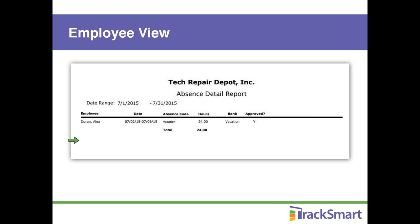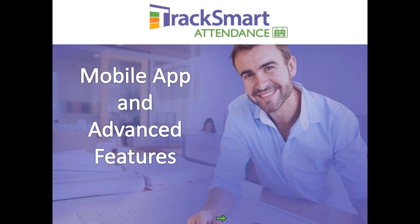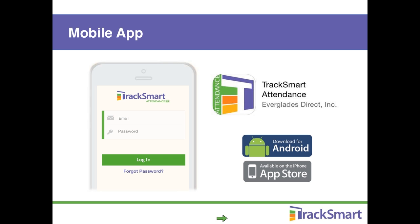An employee's absence report summarizes the absences they've taken for a requested timeframe. Moving on to mobile app and advanced features — access to the Track Smart Attendance employee mobile app is included with the free trial and all paid plans, available for both iPhone and Android. Search for it in the app stores by entering 'Track Smart.' Other apps like Track Smart Scheduling and Track Smart Time Clock will also appear, so make sure you choose Track Smart Attendance with the correct icon.